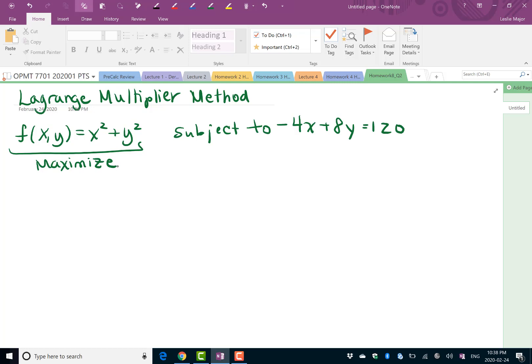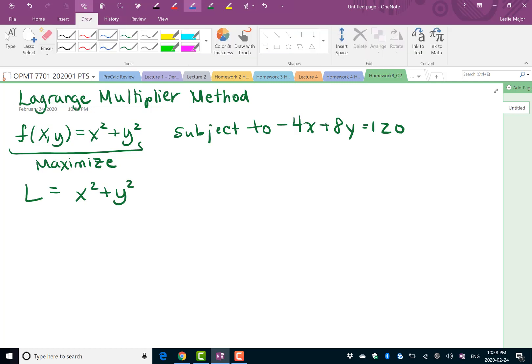First step is to build what's called our Lagrange function. We take the f and then we also take this constraint. What we do with the constraint is reshuffle it around so everything's on one side: minus 4x plus 8y minus 120 equals 0. Then we do plus lambda times the constraint, and we put that constraint inside the bracket.